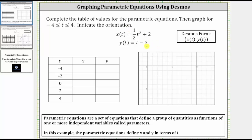Notice how on the table, the values for t are -4, -2, 0, 2, and 4. Using Desmos, we enter parametric equations in the form of an ordered pair, x(t), y(t).